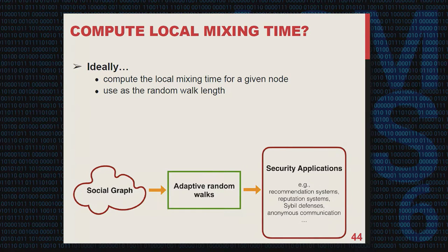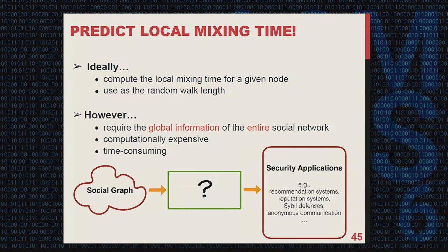To propose adaptive random walks, the ideal approach is to compute the local mixing time for each given node using brute force and then set it as the random walk length. However, the challenge is that computing local mixing time requires global information of the entire social graph, which can be very computationally expensive and time consuming, especially for large-scale social networks.